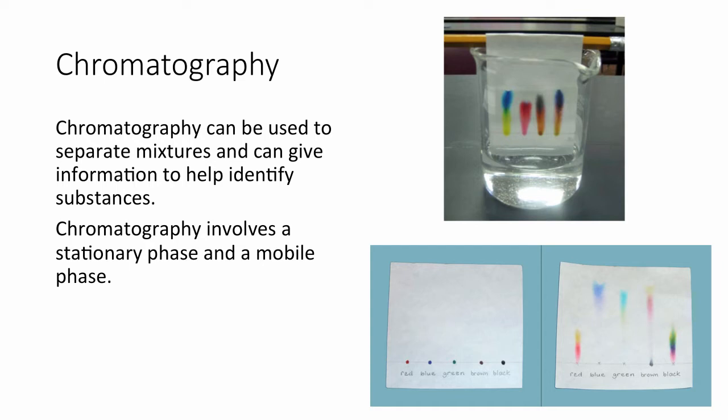For example, in paper chromatography, the stationary phase, the one that doesn't move, is the paper. And the mobile phase is the water or the solvent used. As the chromatography runs, the mixture of inks within the components travels in the mobile phase, the water, and spends some of its time on the stationary phase.